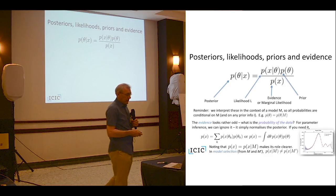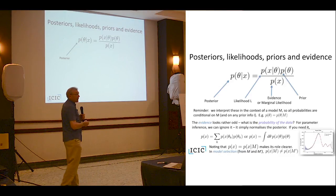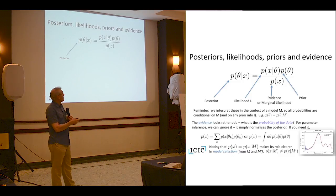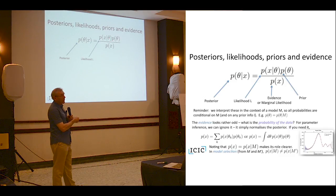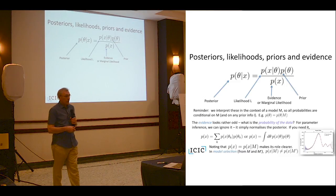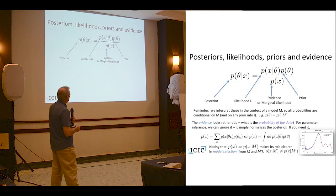Let's have a look at this expression. The term on the left is called the posterior — that is the probability of the parameters after you've done the experiment. It's written in terms of the probability of the data given the parameters, which is referred to as the likelihood, multiplied by the probability of the parameters, called the prior, divided by a term called the evidence, or sometimes called the marginal likelihood in the statistics literature.